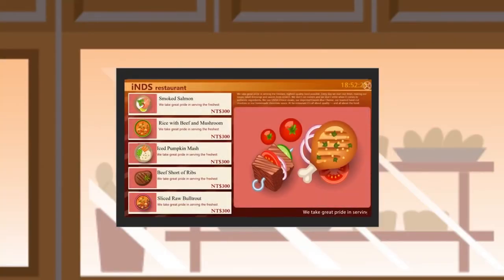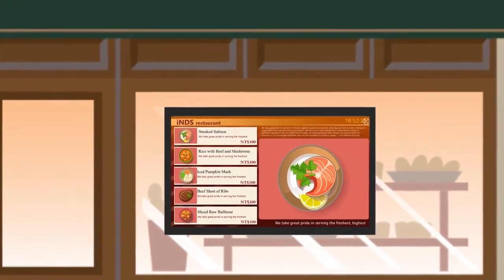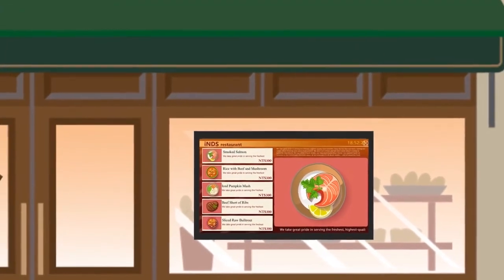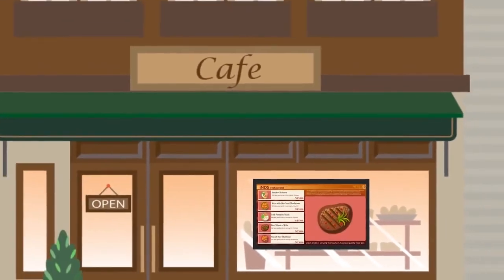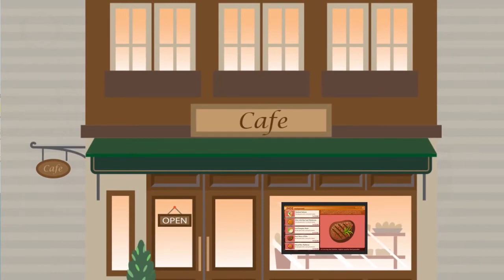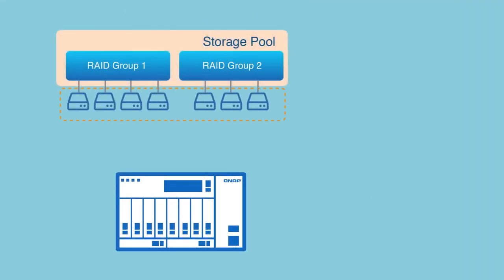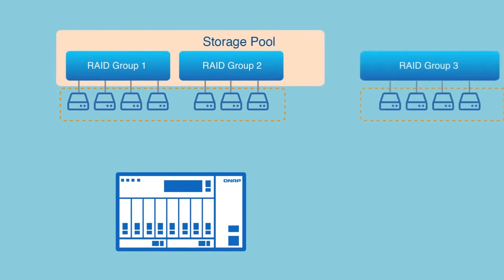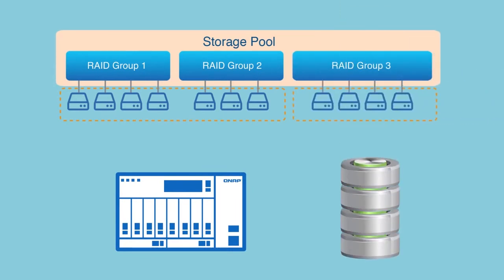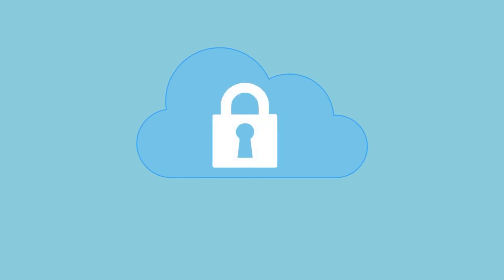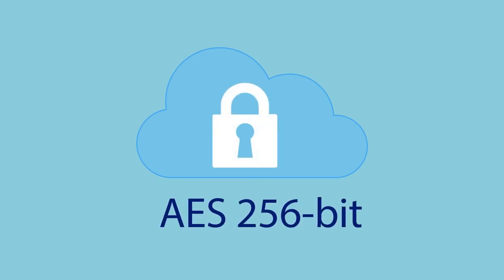Not just offices can benefit from QTS. With Signage Station, businesses can create amazing digital signs and billboards, making it great for generating new business. Businesses can also intelligently use and expand their storage by using storage pools and easy-to-install expansion enclosures. With full-volume encryption, business files are fully protected by advanced encryption methods — even if the NAS is stolen, the files will be inaccessible without the key.